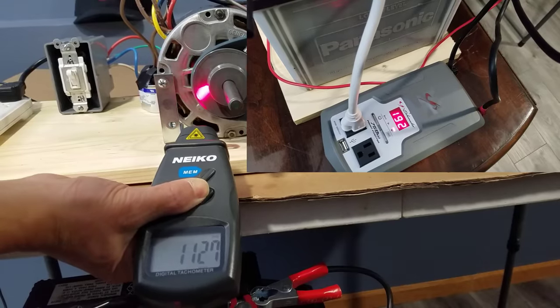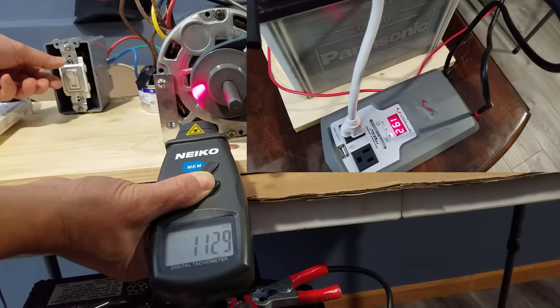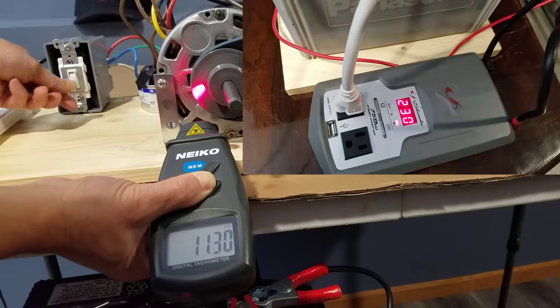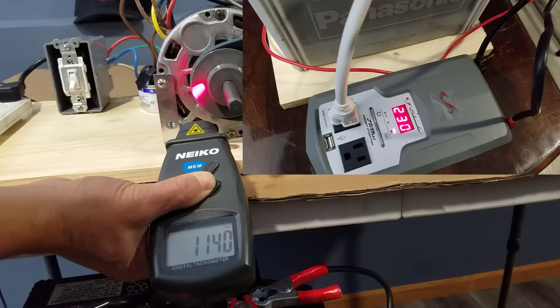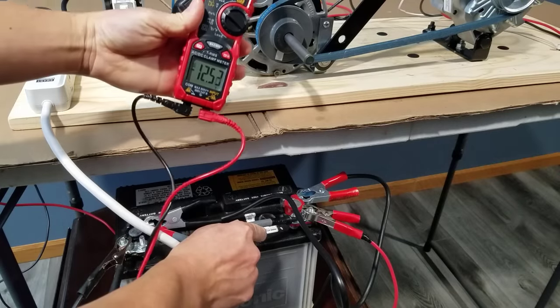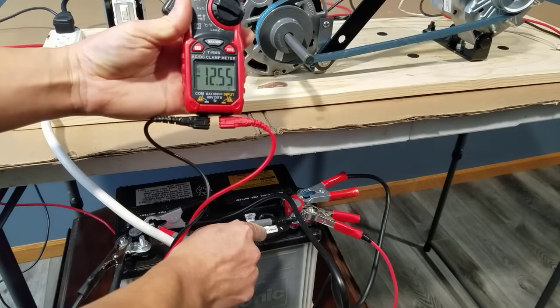Let's take some initial readings. The pulley spins around 1130 RPM at the lowest speed. At medium speed, it spins around 1140 RPM. And the battery reading is about 12.5 with just the inverter on.